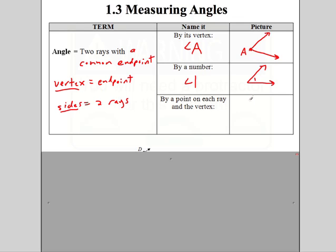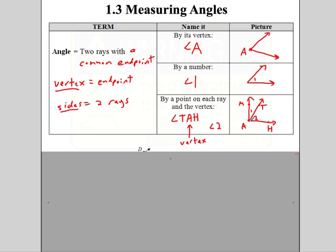Other times we need more information. Sometimes we have angles like this with a bunch of points — let's do it as M, A, T, and H. Maybe we have a picture like this. Can I call it angle A? No — you can't call it angle A because there are two angles here. So now you have to be specific. I'm referring to angle TAH, and the key is the middle letter has to be the vertex. So if I put numbers 1 and 2 in here, I'm referring to angle 2, TAH. You can call it HAT as long as A is the vertex.